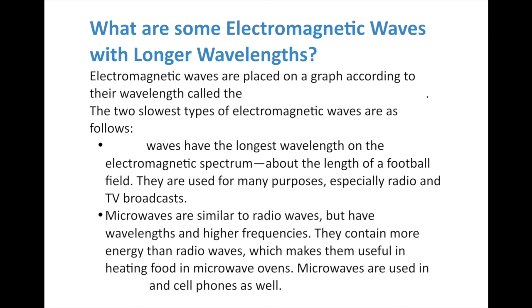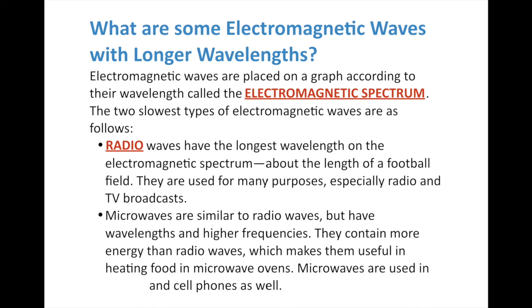We can place electromagnetic waves on a graph according to their wavelength, either longest to shortest or shortest to longest, and we call this graph the electromagnetic spectrum. It lists all the different types of electromagnetic waves that we know of in the universe. We're going to look at them in three groups. The first group is the two longest wavelength types — their frequencies are lower, but their speeds are exactly the same: 300,000 kilometers per second in a vacuum. First up are radio waves.